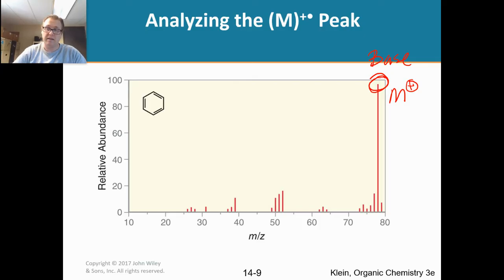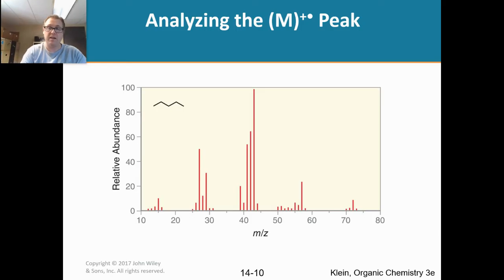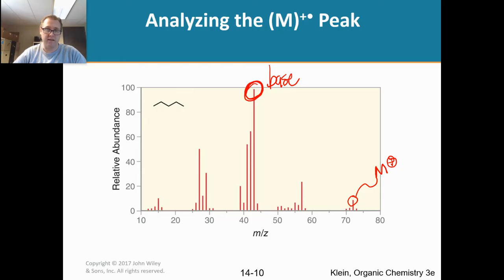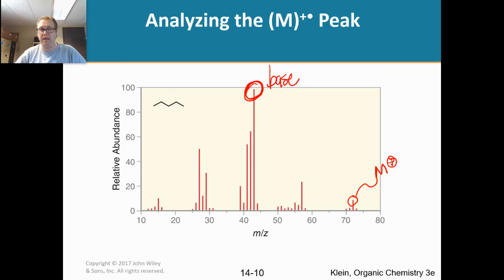If we look at benzene right here, we can clearly identify that this right here is going to be our base peak because it's the largest. But it is not the molecular ion peak — the molecular ion peak is that one right there. So don't make that mistake. We're going to delve into the material further to figure out which is the molecular ion peak, but I'm just showing you the difference here. The biggest peak will always be the base peak.